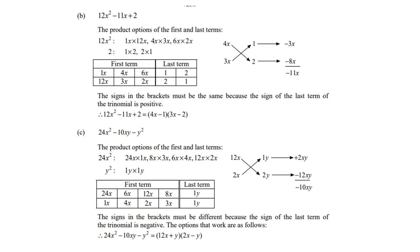Let's look at the third one. 24x squared minus 10x minus y squared. So, 24x squared will be 24x times 1x, 8x times 3x, 6x times 4x, 12x times 2x. And y squared is only 1y times 1y. So, if I cross multiply, I get negative 10x, what I'm looking for. The 2x takes the positive, and the 12x takes the negative.